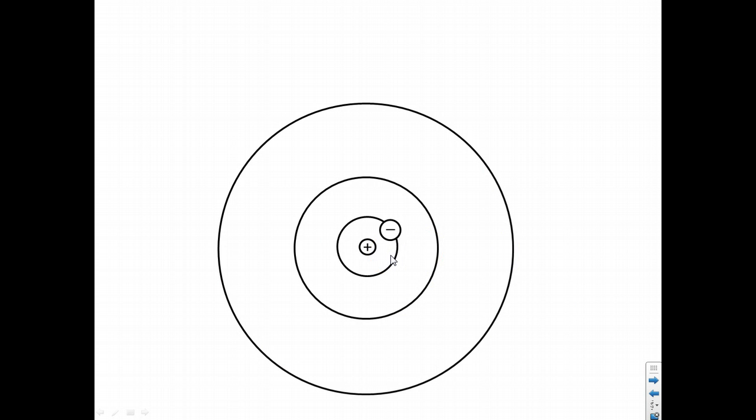The electron, Bohr said, can only be in the energy levels we've drawn in. In other words, the electron can be here or here, but not in the space between orbitals.